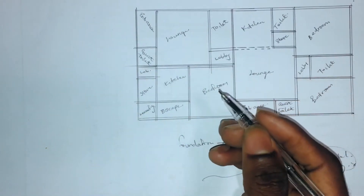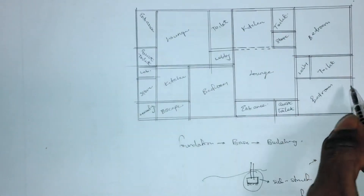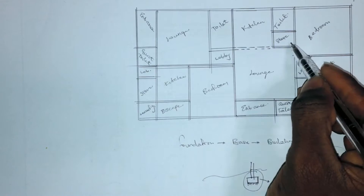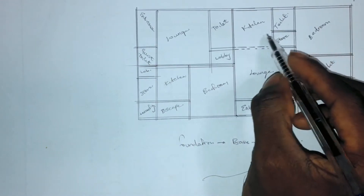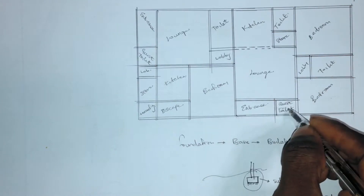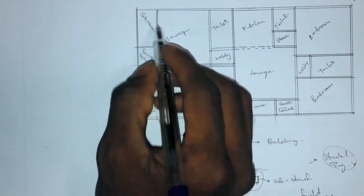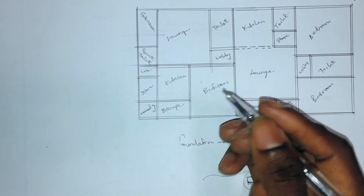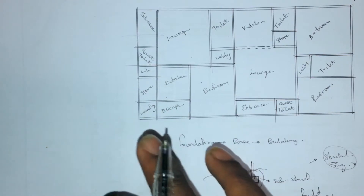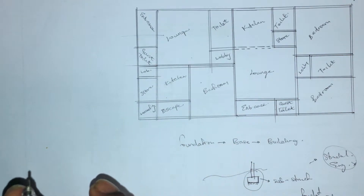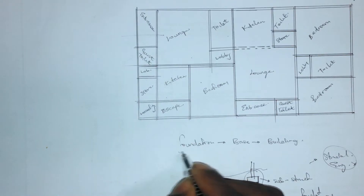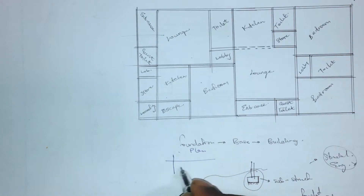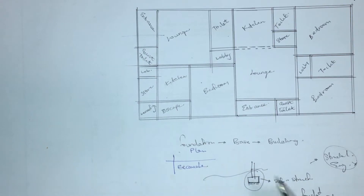Now let's talk about the drawing itself. This is a simple plan — we have a bedroom, a toilet, a lobby, a store, a kitchen, a lounge, an entrance, a guest toilet, and another apartment with a lounge, bedroom, toilet, and kitchen. Whenever you want to draw a foundation plan, you should have it in mind that it only shows the areas which will be excavated.